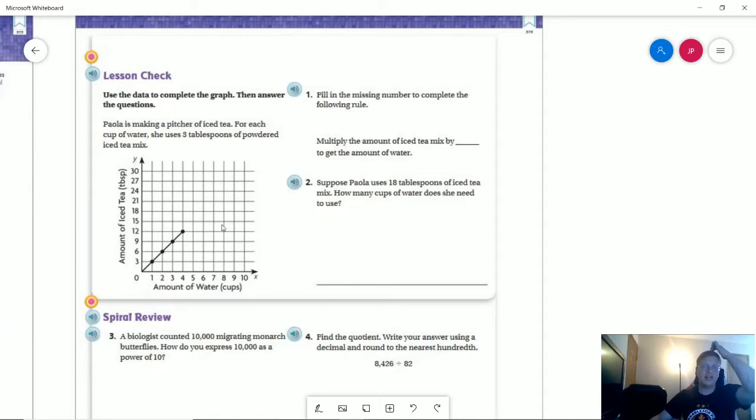For number one on the back, the graph is already there. We need to figure out the rule. We're going to multiply the amount of iced tea mix by a certain number to get the amount of water. Looking at three times one and six times two, we're using three tablespoons per cup.